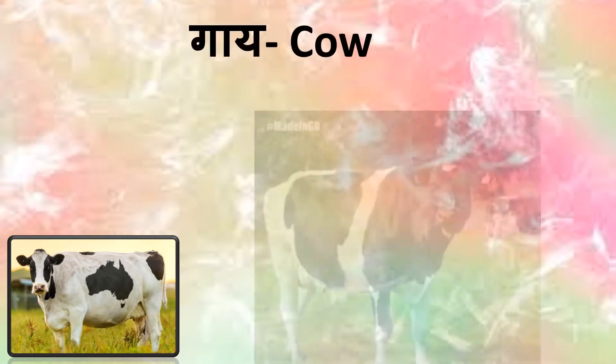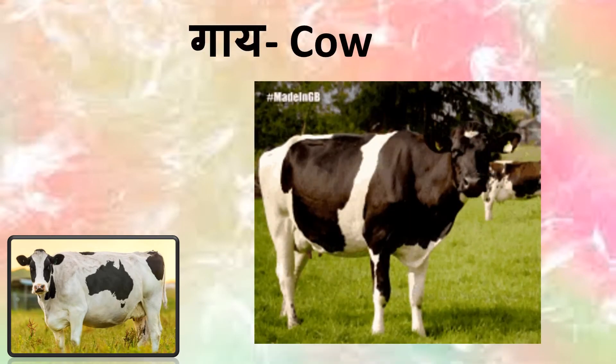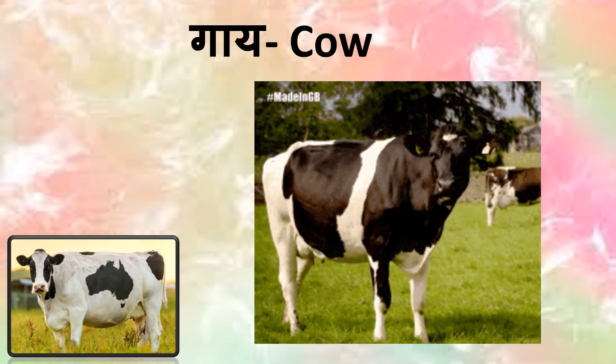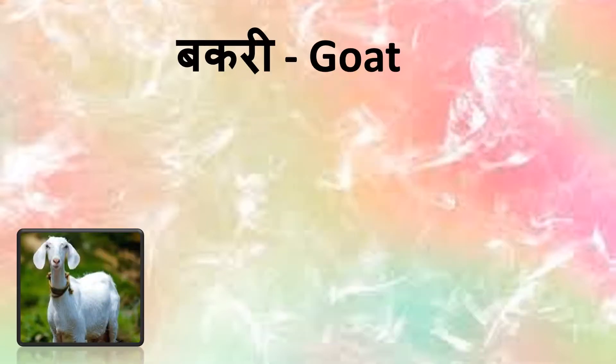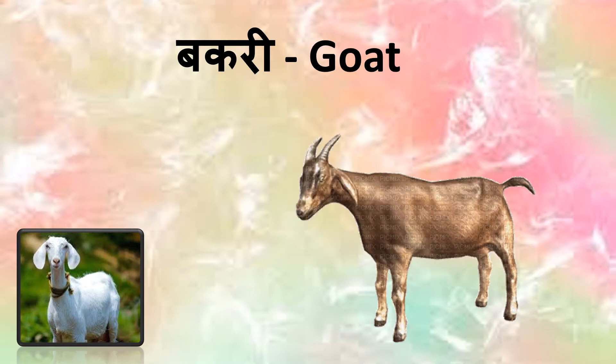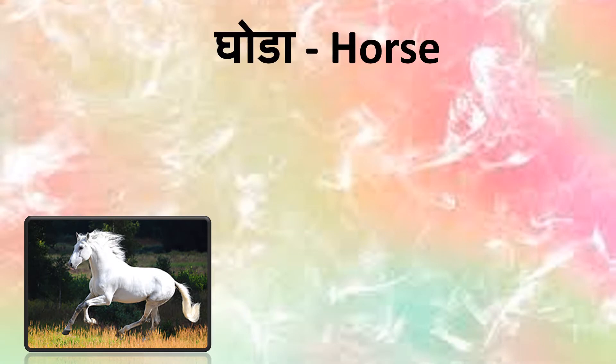Gai. Gai means cow. Bakri. Bakri means goat. Ghoda. Ghoda means horse.